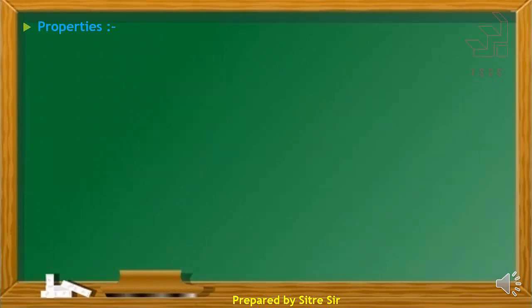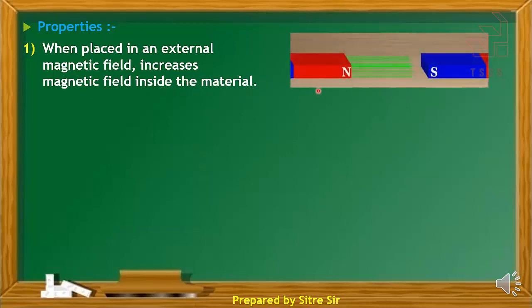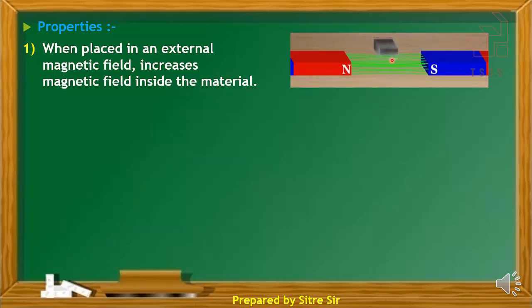The properties of ferromagnetic substances are as follows. When placed in an external magnetic field, the magnetic field increases inside the material. The ferromagnetic substance concentrates the magnetic field lines inside itself, with the maximum lines of force passing through the inside, increasing the magnetic field within.